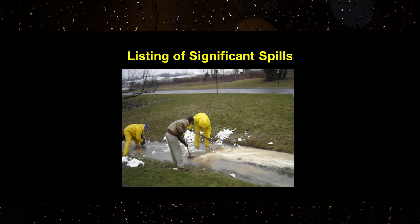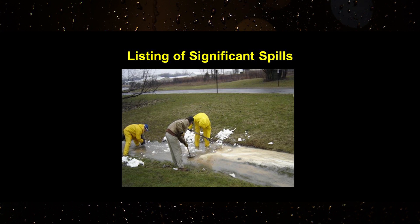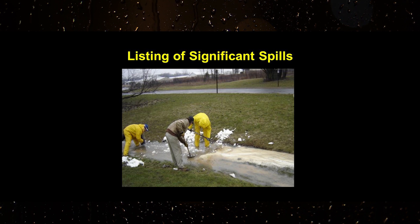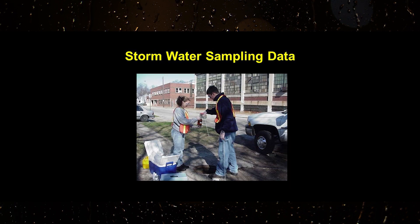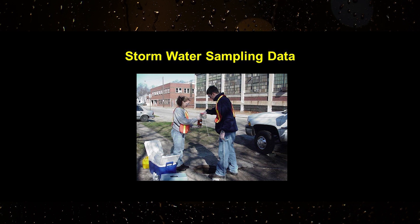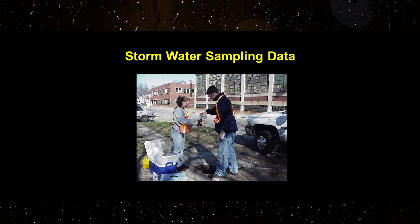The stormwater pollution prevention plan must include a listing of spills that have occurred at the facility in the last three years. Any stormwater sampling data that is required by an industrial stormwater permit needs to be retained with the stormwater pollution prevention plan file.